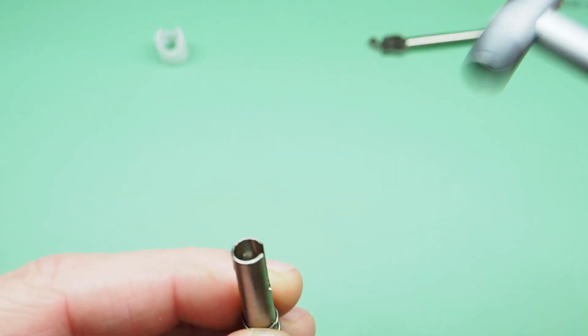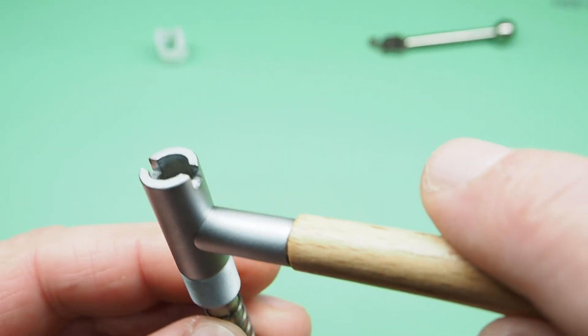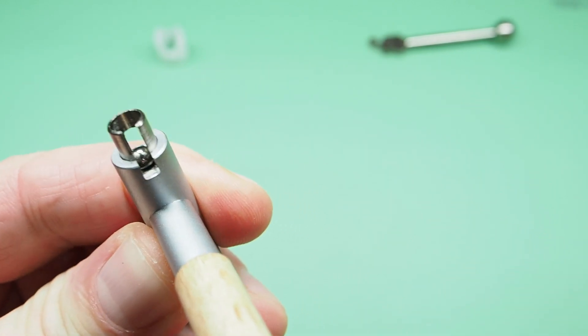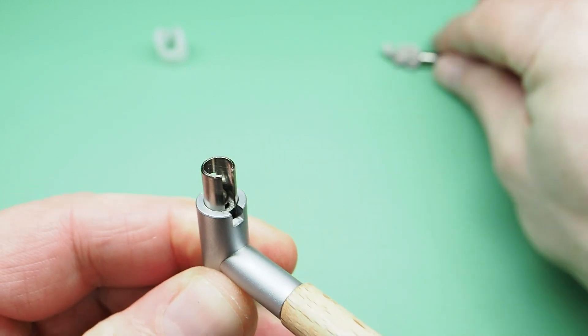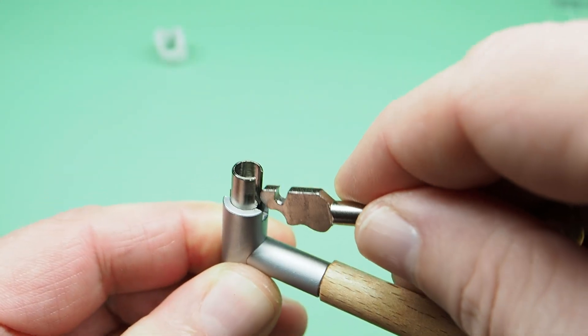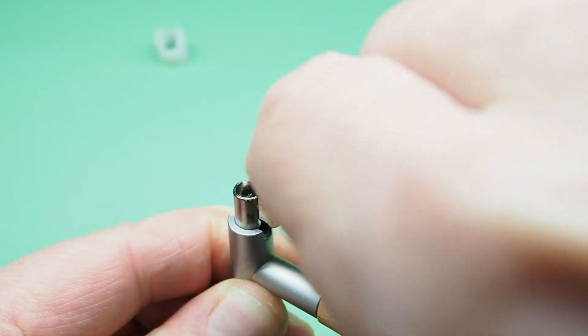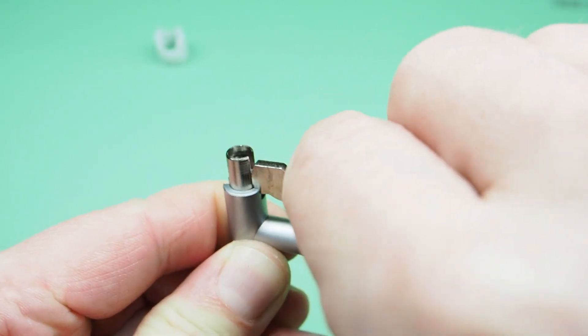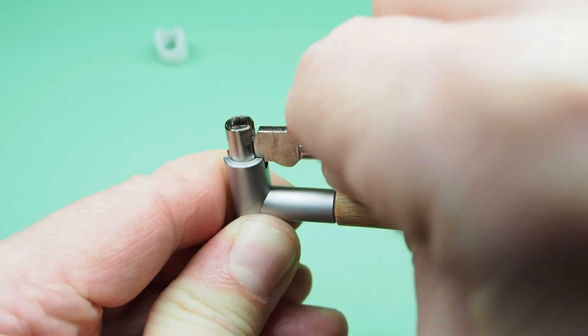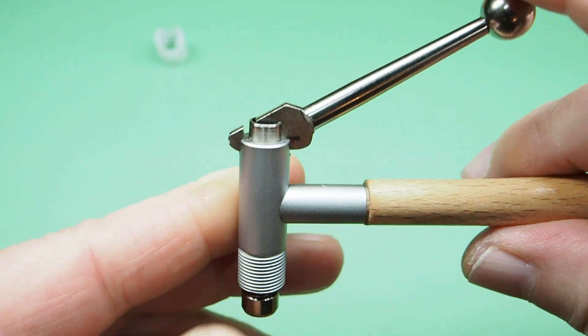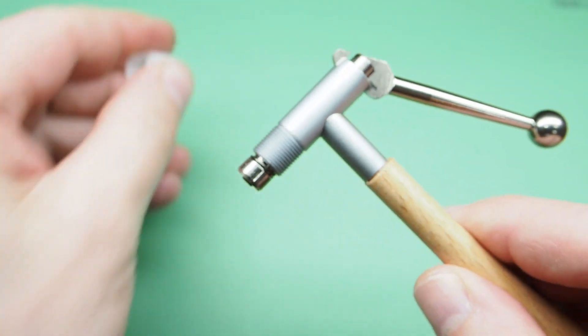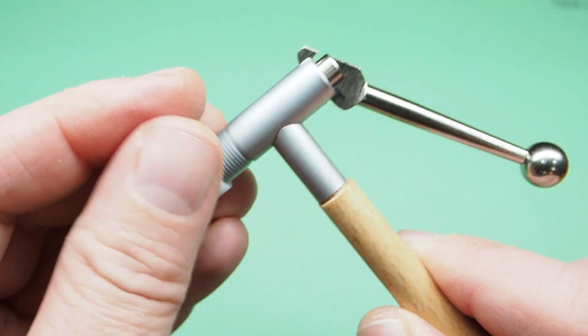Now we can insert the shaft into the handle. Pushing on the shaft from the bottom, we can now insert the lever. We can test the operation. And finally we can put back on the plastic part.